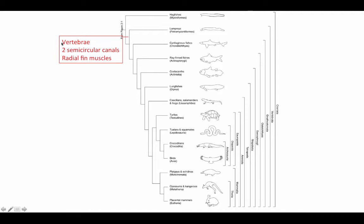And of course, this includes the presence of vertebrae. Secondly, all of these groups have two semicircular canals in their inner ear — organs involved with detecting the orientation of your body in space. There are two of them in this group that includes lampreys and the rest of the vertebrates. And also radial fin muscles, so they have muscularized fins that are under active control. In the case of lampreys, these are just dorsal fins. Hagfish do not have muscularized fins.